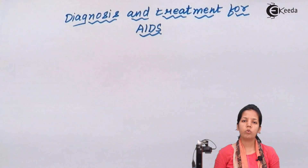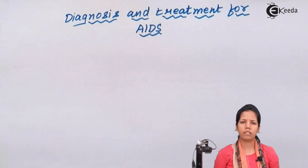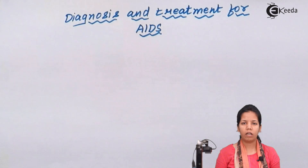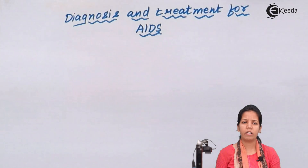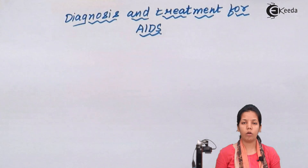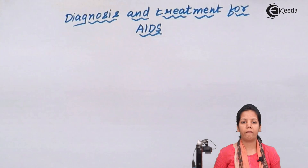HIV reduces the immune system of your body to very drastic levels, and due to this you become prone to every small disease you come around. Even a small cough and cold, yellow fever, normal dysentery, or diarrhea could be lethal or dangerous for individuals who have acquired HIV.